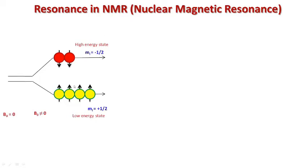The term resonance in NMR spectroscopy can be understood quantum mechanically as well as by classical mechanics. In the quantum mechanical picture, drawn for proton NMR with spin quantum number i = 1/2, the total number of energy states is 2i + 1 = 2. These states are represented by mi = +1/2, the low energy state, and mi = -1/2, the high energy state.